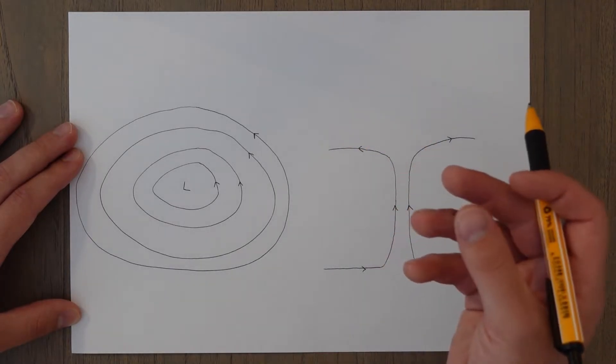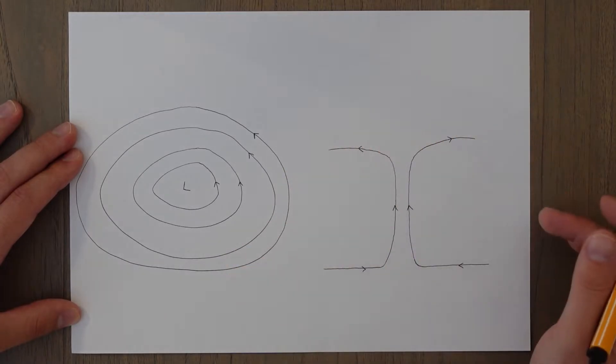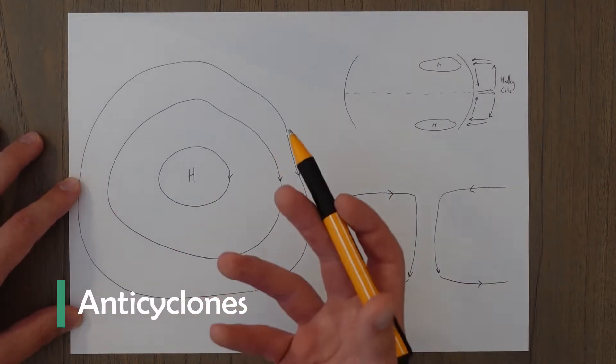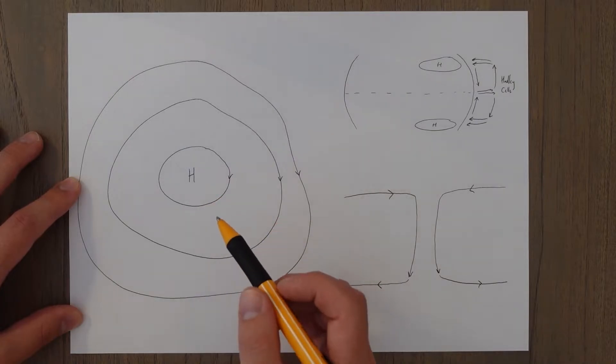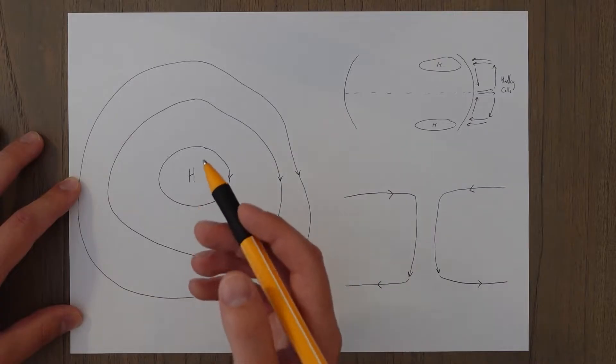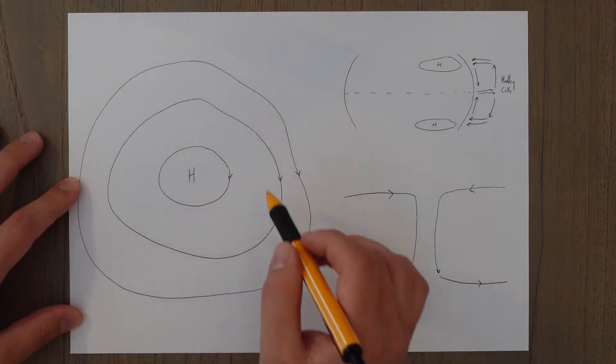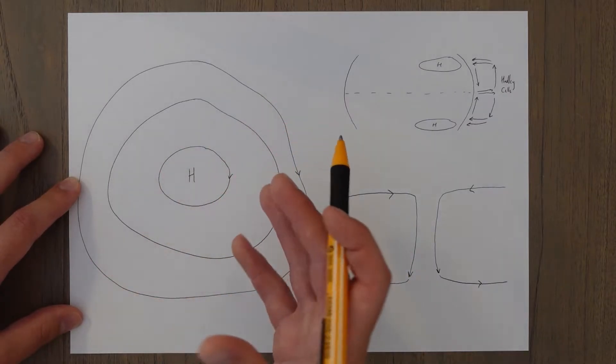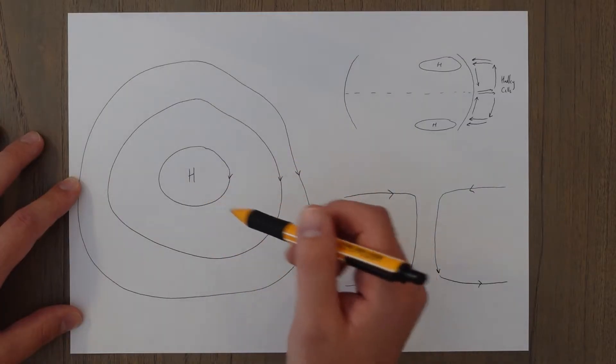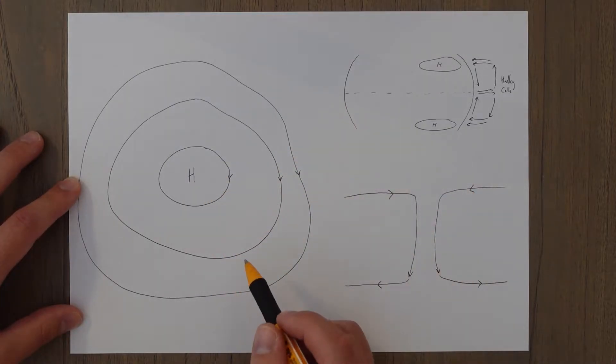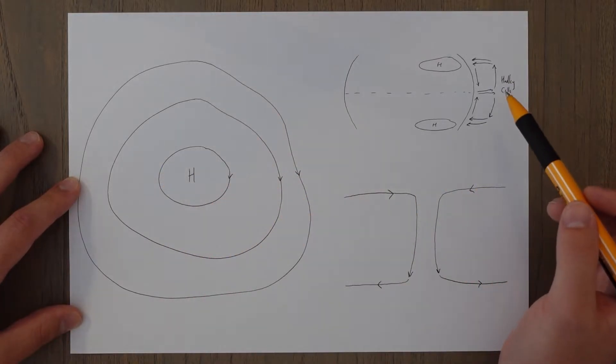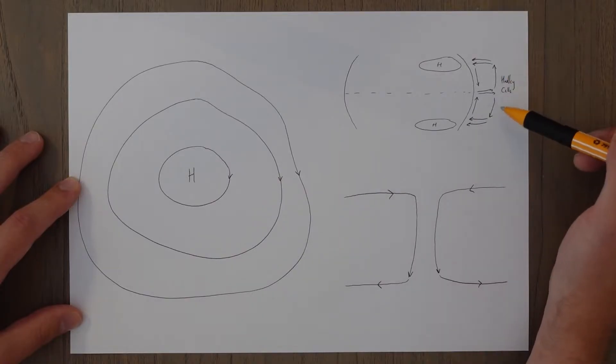So anti-cyclones are opposite to depressions. They are areas of relatively high pressure when compared to the surroundings. And just like in the case with lows, these highs are generally round, but the isobars tend to be a bit further apart, which leads to some lighter winds. And that's because there's a lesser pressure gradient force.